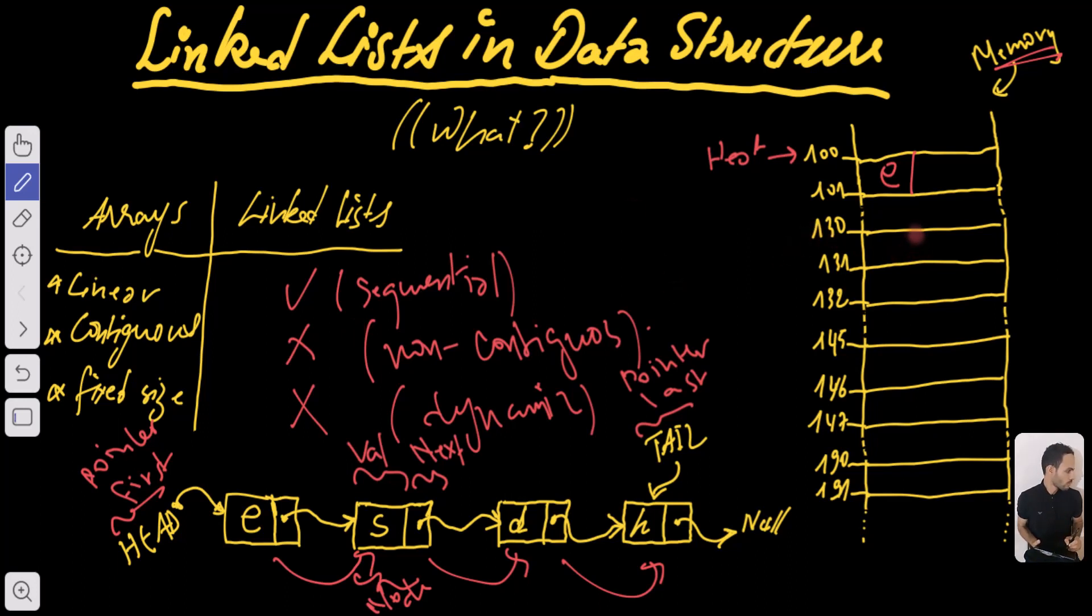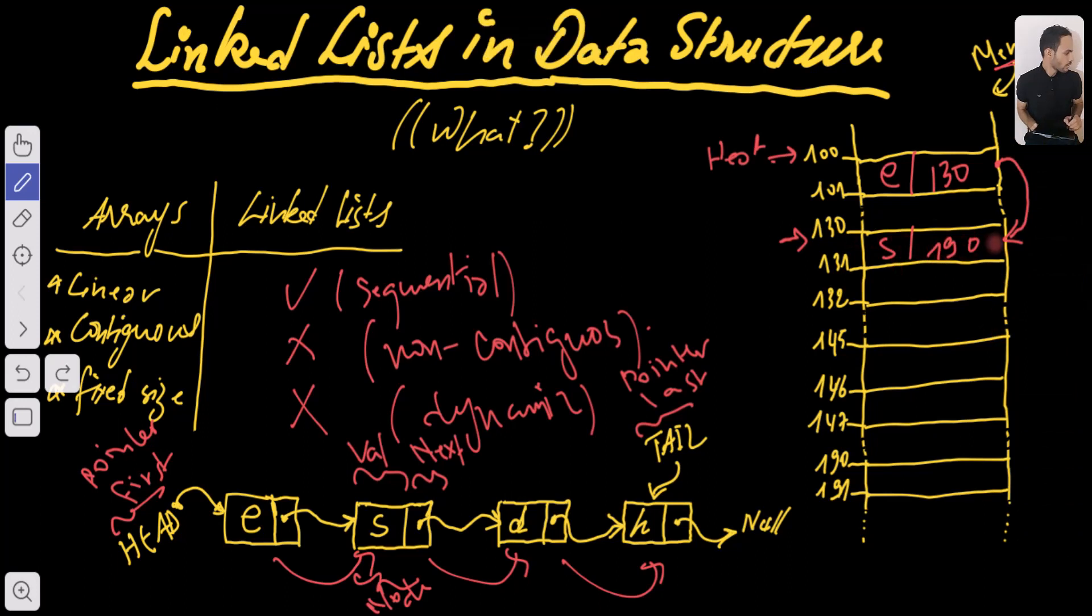So the letter S is going to be here. Our next element is pointing to the address 130. Now in the same way let's put the third element or the third node at the address 190. So our third element is going to be at the address 190.